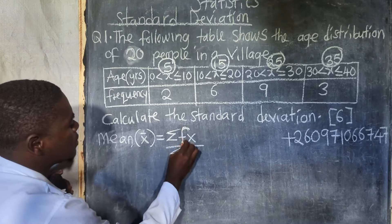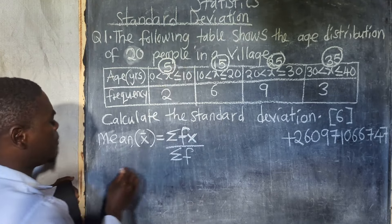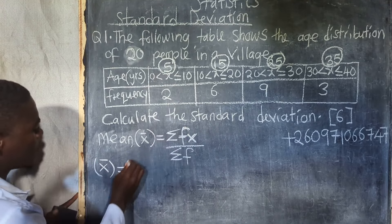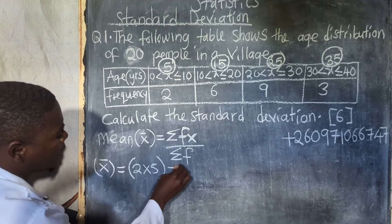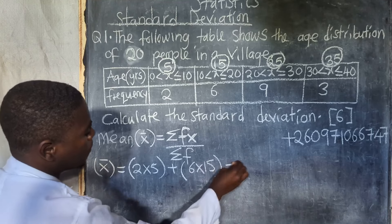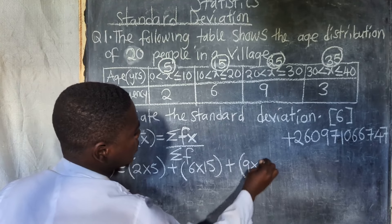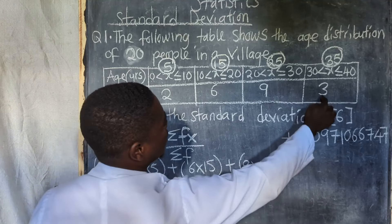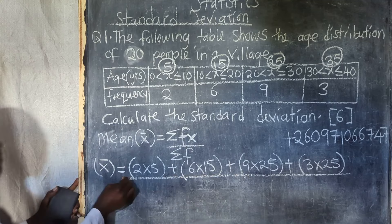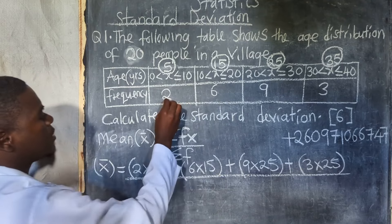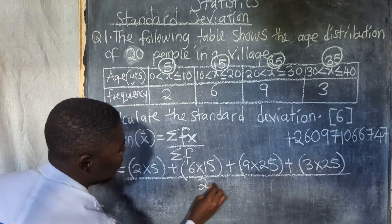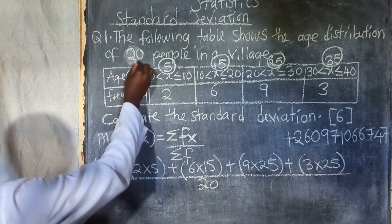So you are multiplying frequency times x, where x is the midpoint value. Mean is equal to: frequency 2 times 5, plus 6 times 15, plus 9 times 25, plus 3 times 35 — everything divided by the total frequency. You add the frequencies: 2 plus 6 is 8, plus 9 is 17, plus 3 is 20. You discover that 20 is even given in the question, but if not given, just add the frequencies to find total frequency.